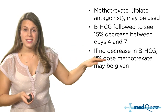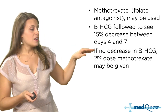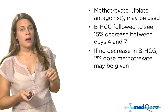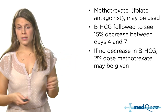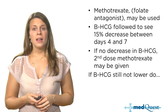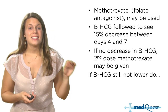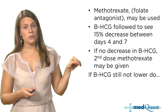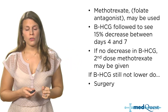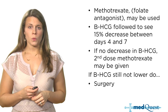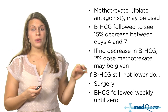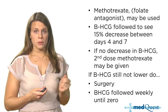If you don't see the 15% decrease by day seven, give a second dose of methotrexate. After two doses this works very well for treatment of the ectopic pregnancy. If the beta-HCG is still not dropping after the second dose, you go to surgery because the methotrexate isn't working. The beta-HCG is followed every single week until it reaches zero.